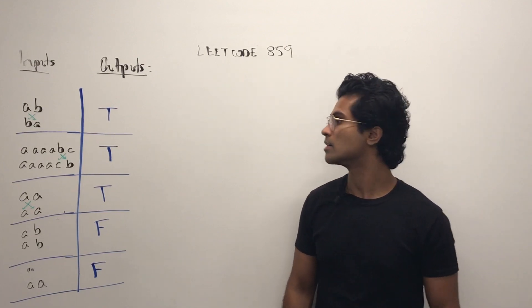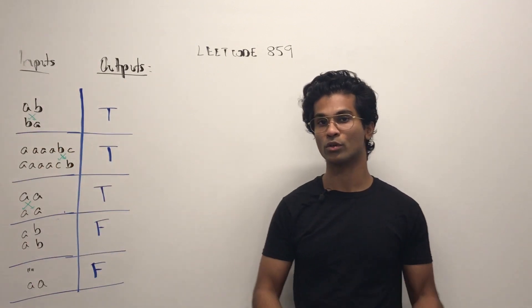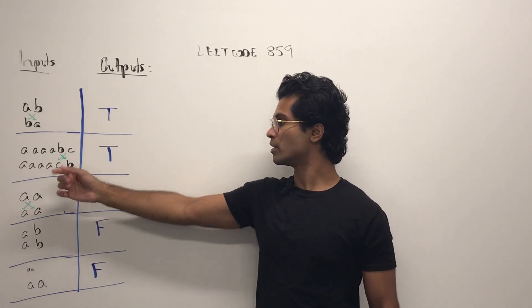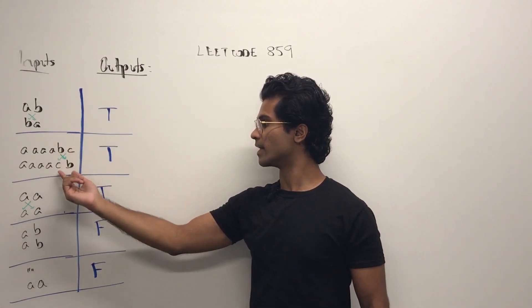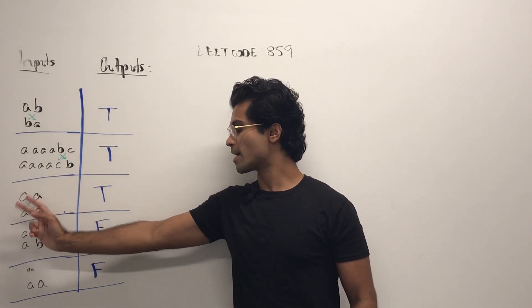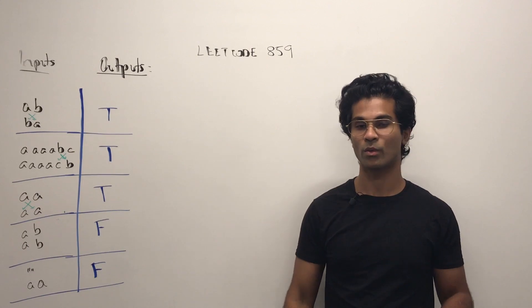Let's look at the cases. The first one AB and BA is going to be true because we can swap A and B to get this one. For this one we can swap B and C to get the second string. For this one we can swap A and A and they're both going to be the same because A and A are the same letters. So we're allowed to do that.